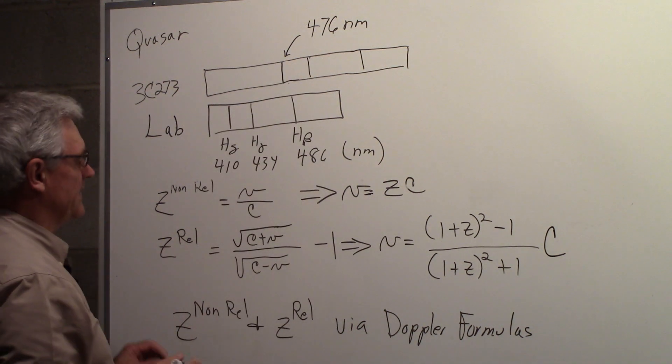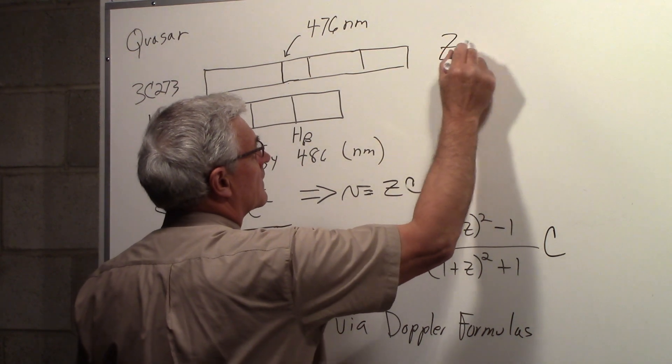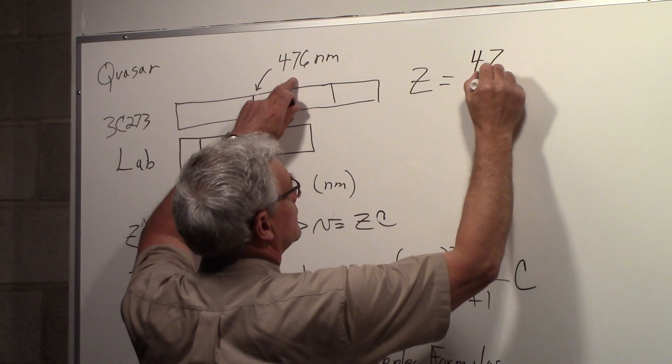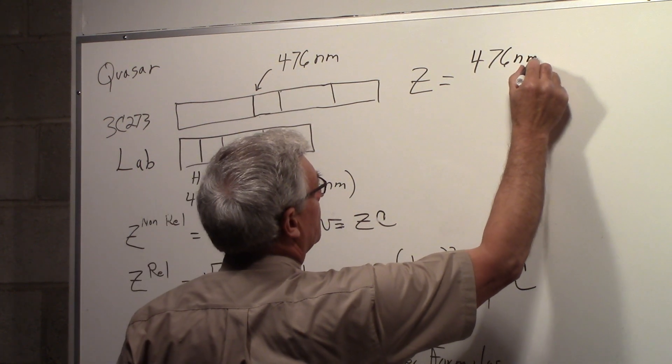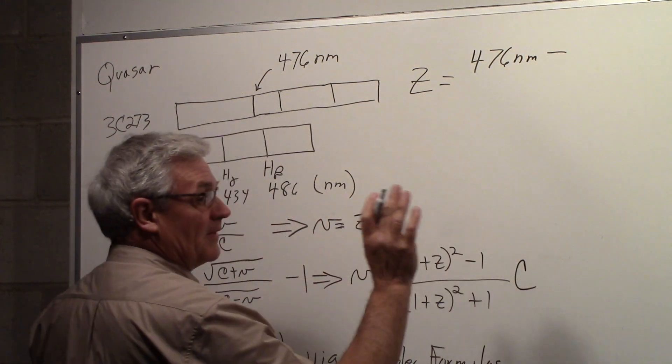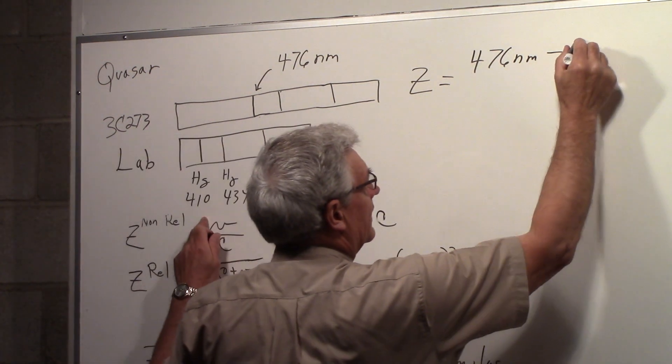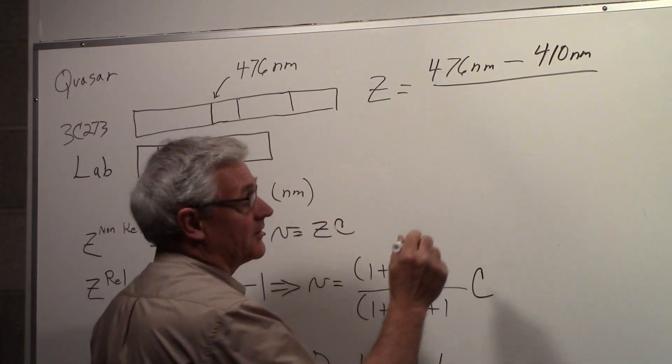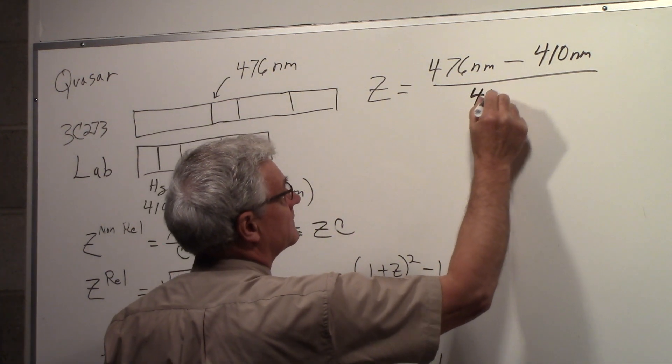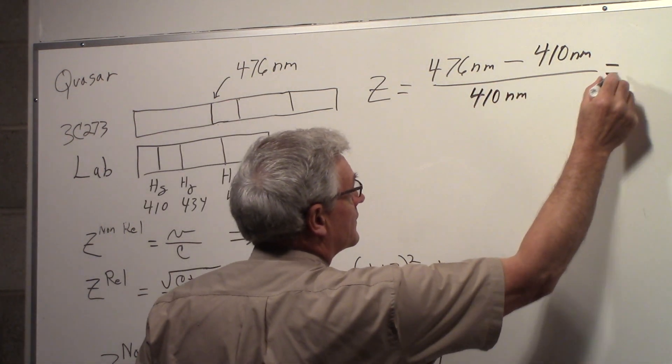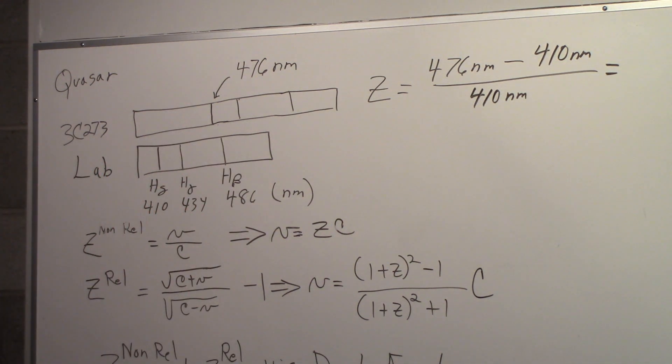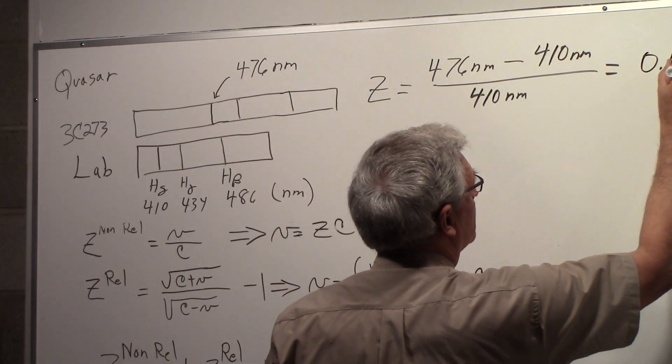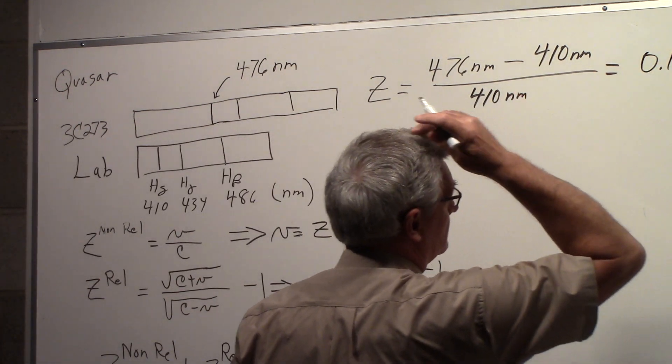So we can calculate the z for that. The z will be the wavelength we're seeing, so it's λ - λ₀. The λ₀ is going to be 410 nanometers divided by λ₀, 410 nanometers. So if we work that out, we'll get 0.161 for z.